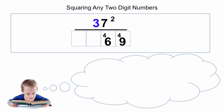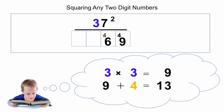The next step is to square the tens digit — in this case 3. So 3 times 3 is 9. We have a 4 we carried over, so 9 plus 4 is 13. We write down the 3 and the 1, and there's our answer: 1,369.